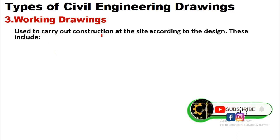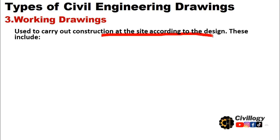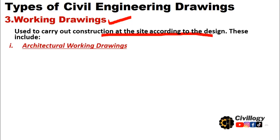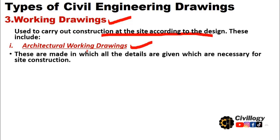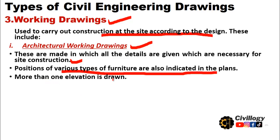The third type is working drawings. Working drawings are used to carry out construction at the site according to the design. Submission drawings are only for approval — if you want to carry out actual work on site, you must provide working drawings to the site engineer. Working drawings are further divided into architectural working drawings and structural working drawings.